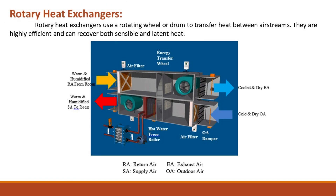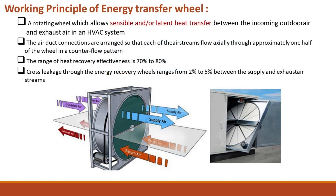Rotary Heat Exchangers use a rotating wheel or drum to transfer heat between air streams. They are highly efficient and can recover both sensible and latent heat. Working Principle of Energy Transfer Wheel: A rotating wheel allows sensible and latent heat transfer between the incoming outdoor air and exhaust air in an HVAC system. The air duct connections are arranged so that each air stream flows axially through approximately one half of the wheel in a counter-flow pattern. The range of heat recovery effectiveness is 70% to 80%. Cross leakage through the energy recovery wheels ranges from 2% to 5% between the supply and exhaust air streams.